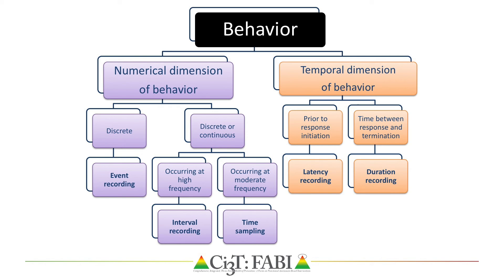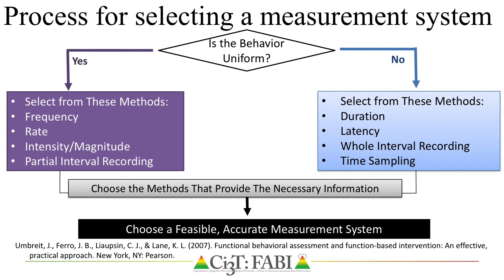Event-based measurement systems tend to be well aligned for measuring uniform behaviors and include gathering permanent products, frequency recording — the count, or number of times the behavior was observed in a session — converted to rate when possible, or rating the intensity or magnitude in which a behavior was performed. Time-based measurement systems tend to be well aligned for measuring non-uniform behaviors, such as duration or latency recording, interval recording, or time sampling.